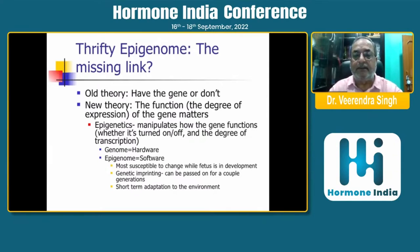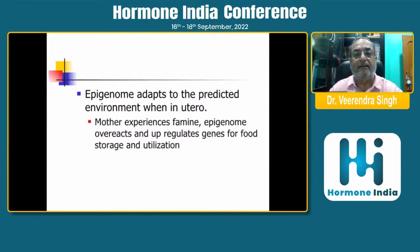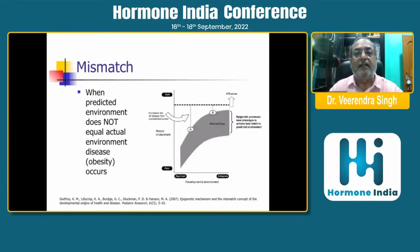Epigenetic changes are more susceptible to change while the fetus is in development. Genetic imprinting can be passed on for a couple of generations as short-term adaptations to the environment. The epigenome adapts to the unpredicted environment when in utero. When the mother experiences famine, the epigenome overreacts and upregulates genes for food storage and utilization. In nowadays, there is a mismatch: when the predicted environment does not equal the actual environment, obesity develops.